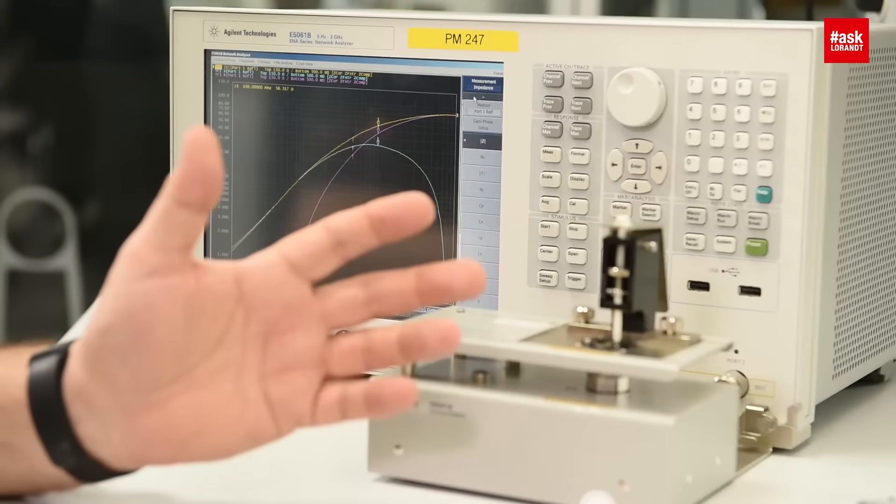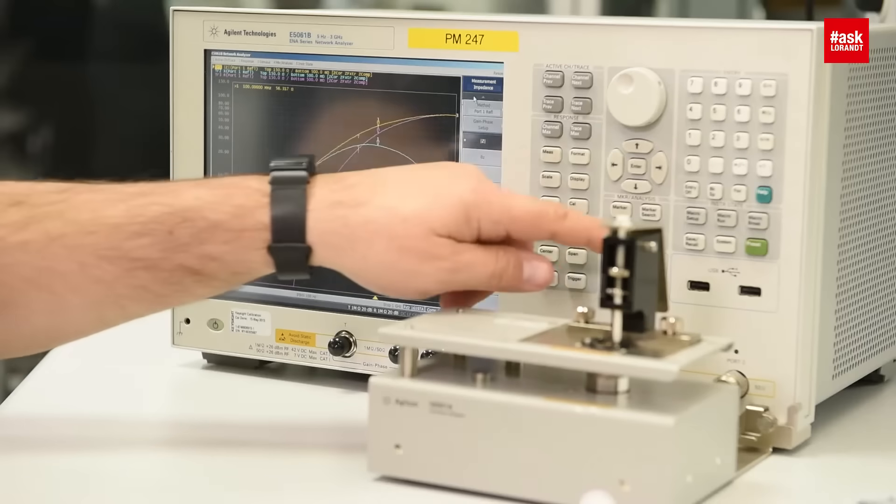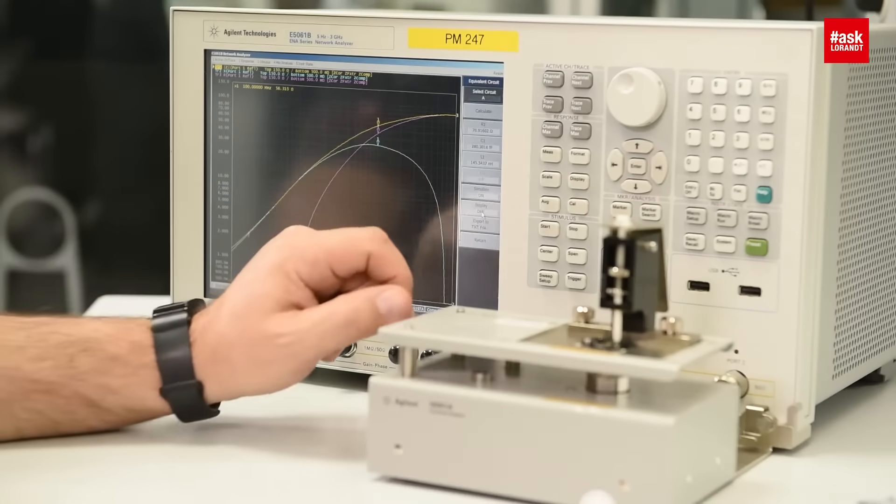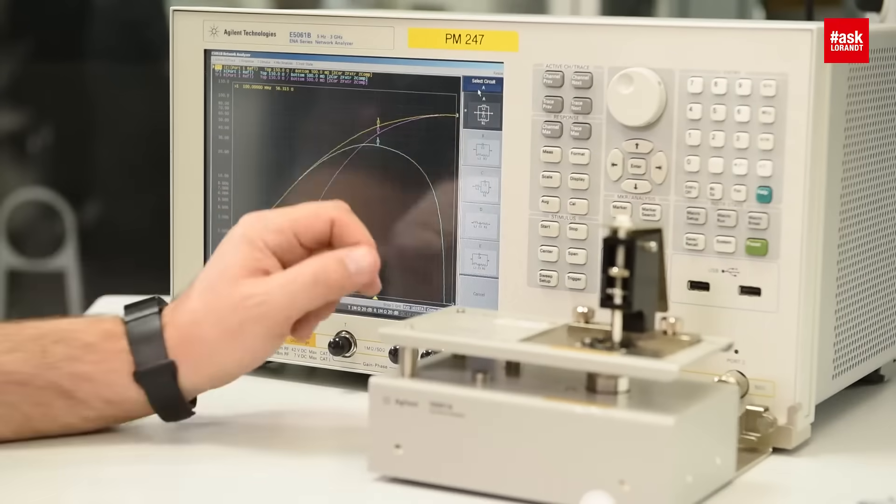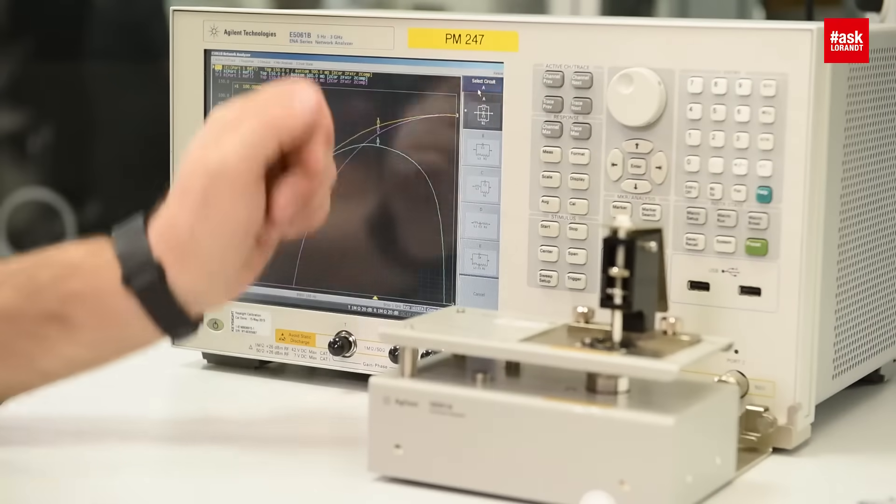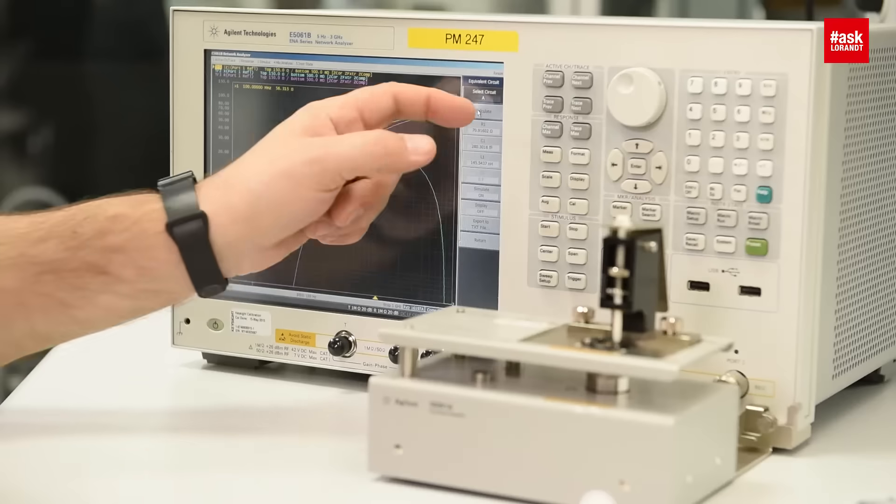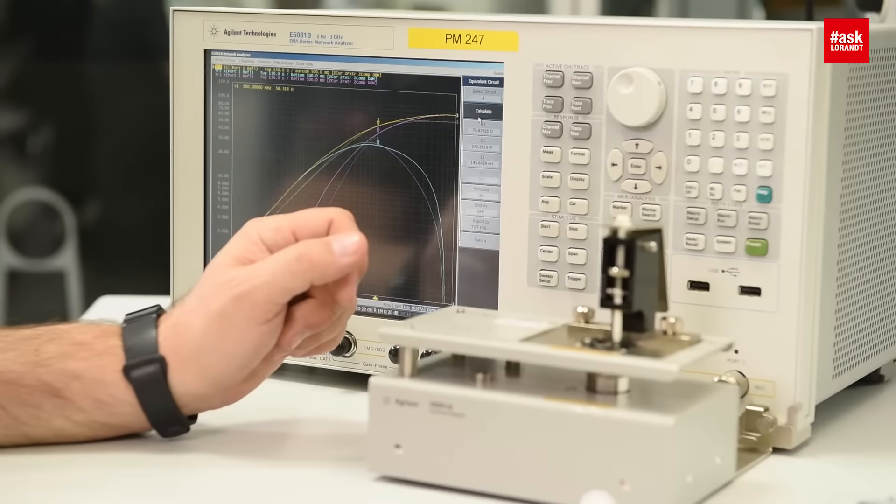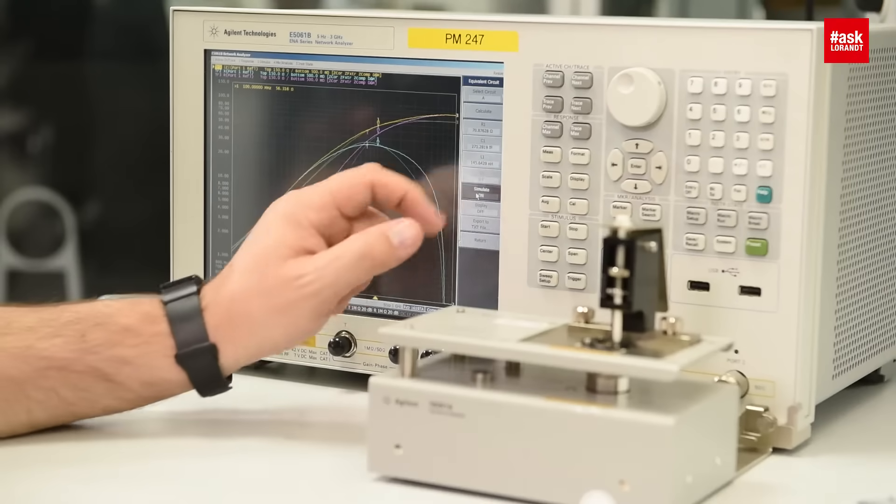Now, if you want to have this equivalent circuit, we will go to the analysis, equivalent circuit analysis. Select the circuit LCR in parallel here. Then start to calculate the value. After that, press the simulate button.